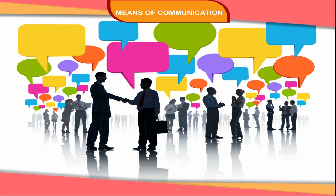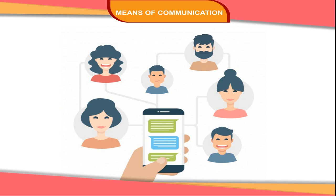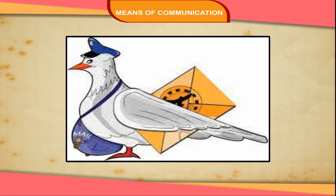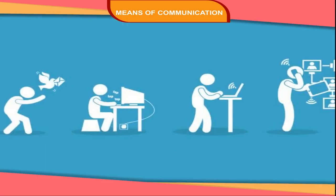We live in a society. To maintain our social contact, we send and receive messages. The process by which we receive and send messages is called communication. Long ago, people sent messages through trained pigeons or messengers. The messengers used to go on foot or on animals. Nowadays, there are various means of communication which are easy and fast.